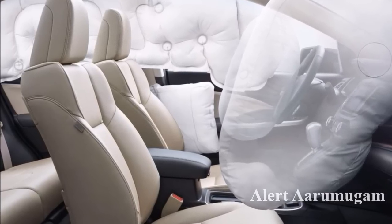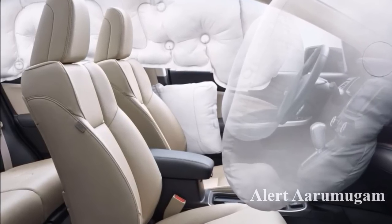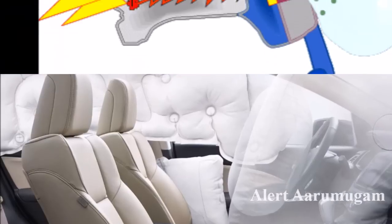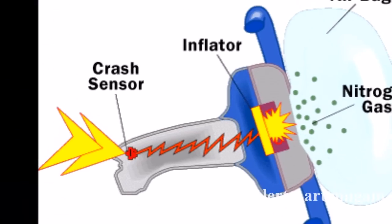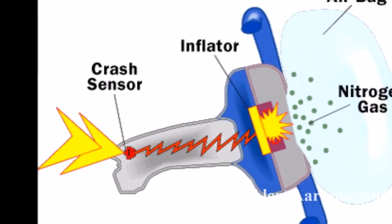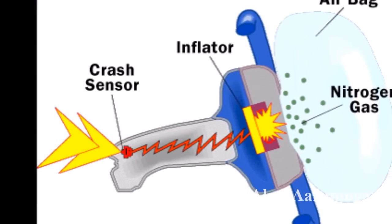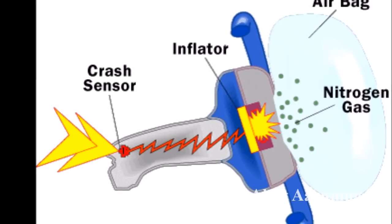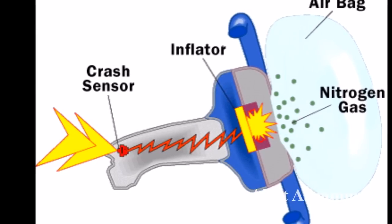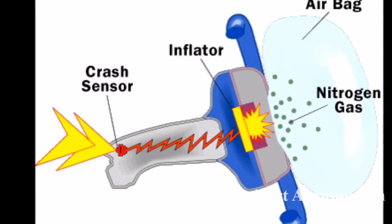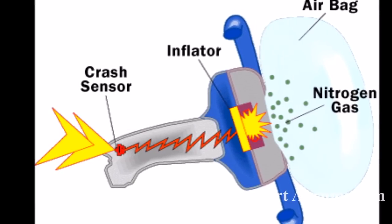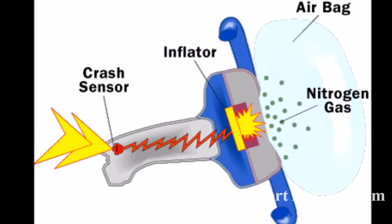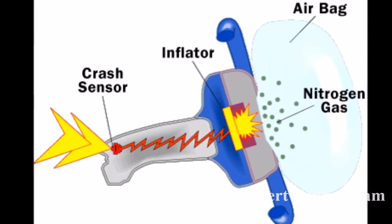The steering wheel contains the airbag. The airbag has a heating element. The current activates the heating element, which then generates gas.